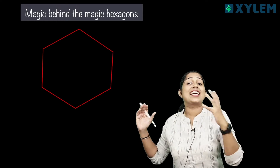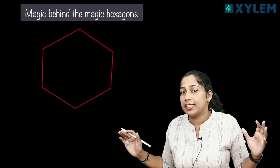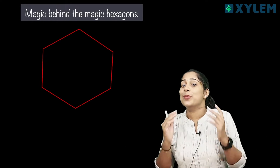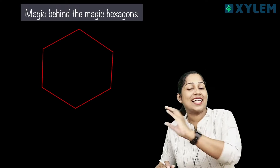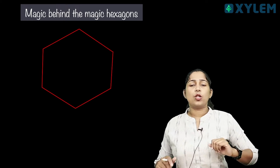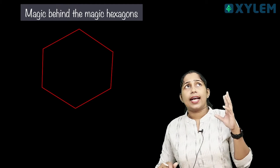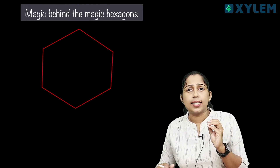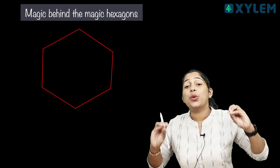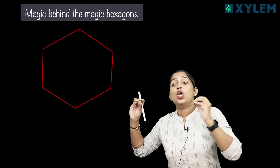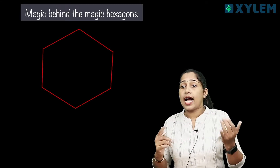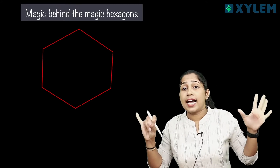Let's say this is a magic hexagon. Let's talk a little bit of magic. What is the magic hexagon? A hexagon is six-sided.